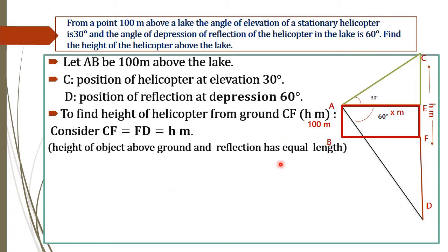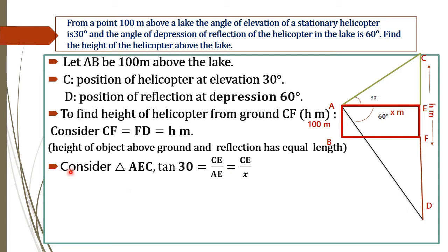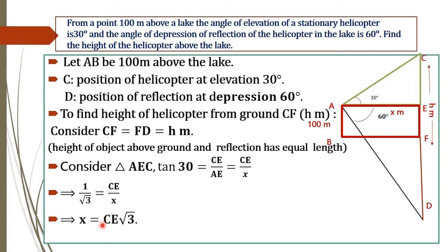First, consider triangle AEC. tan 30° equals opposite side over adjacent side, that is CE over AE, which equals CE over X, where AE is given the value X. Substituting tan 30° = 1/√3, we get 1/√3 = CE/X, and multiplying across gives X = CE√3.